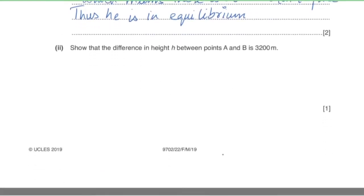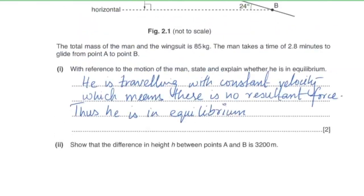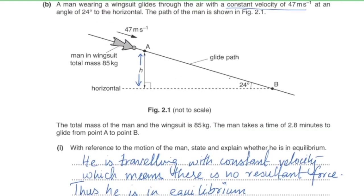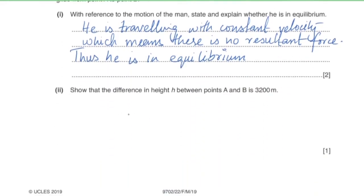Part two: show that the difference in height h between points A and B is 3200 meters. The distance covered from A to B is 47 × 2.8 × 60 = 7896 meters. The vertical component is 7896 × sin(24°), which gives a height difference of 3200 meters.